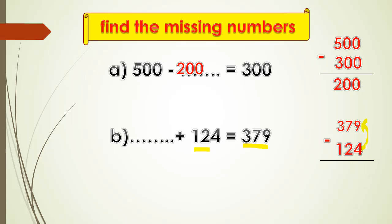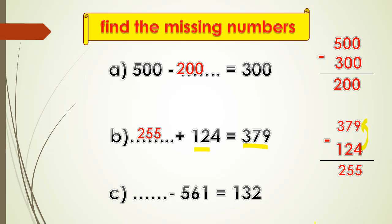Seven minus two equals five, three minus one equals two. So the answer will be two hundred fifty-five.